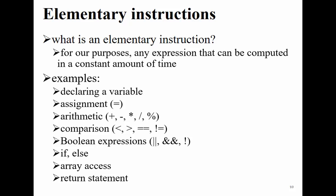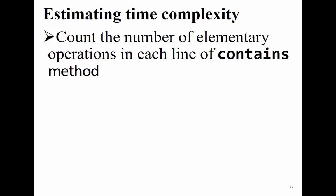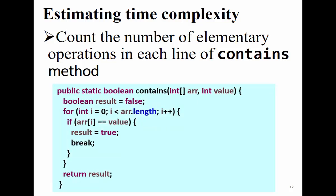Now let us go back to our example and count the elementary instructions in the `contains` method. I encourage you to take a piece of paper and pencil and try to count them step by step. We have: 2 elementary operations on the declaration and assignment of result; 1 for the for loop; 3 for the condition check inside the loop (array access, compare, and if statement); 1 for the assignment; 1 for break; and 1 for return.